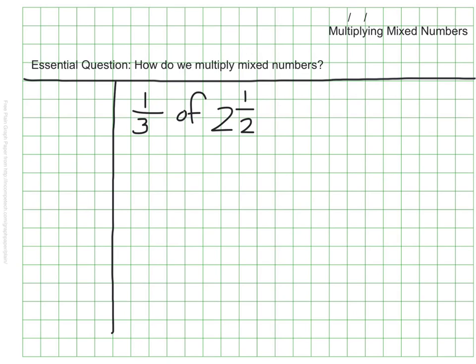The first thing I want us to do is just to estimate what we think might be a reasonable answer so that when we work through it, we can know if our answer makes sense. If I take one-third of two and a half, I know I'm taking part of two and a half, so my answer is going to get smaller. It's reasonable to assume that our answer will be less than two and a half. I actually think that it's going to be less than one.